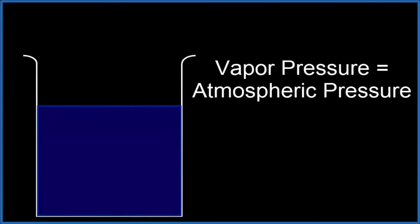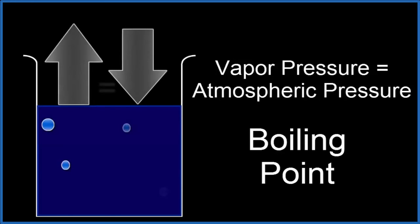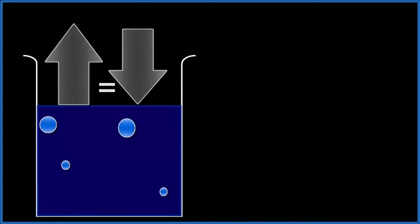We can make boiling happen by either increasing the vapor pressure or decreasing the atmospheric pressure. Either way, once the vapor pressure and the atmospheric pressure are equal, we've reached the boiling point, and boiling can begin.